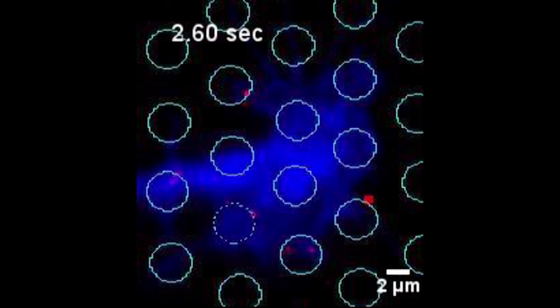This movie illustrates the motion of single N-cadherin molecules as red spots in a growth cone highlighted in blue. Note the diffusive behavior and the occasional arrest of the molecules on the micropatterns shown as white circles and corresponding to homophilic N-cadherin adhesion.